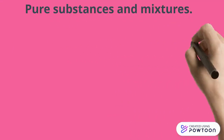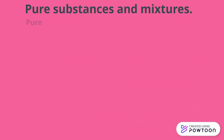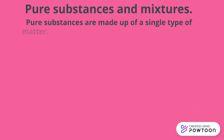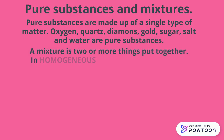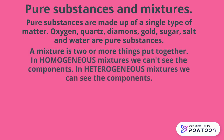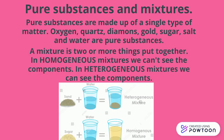Pure substances and mixtures. Pure substances are made up of a single type of matter. Oxygen, diamonds, sugar, and water are pure substances. A mixture is two or more things put together. In homogeneous mixtures, we can't see the components, and the opposite is true in heterogeneous mixtures. For example, if you mix sand and water, you can see both components, but if you mix sugar and water, you cannot see them both.